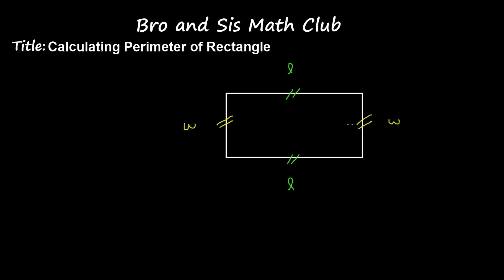So both of these Ws have the same measurement. Now to find the perimeter of a rectangle, you need to add up all the sides. So P is equal to L plus L plus W plus W.